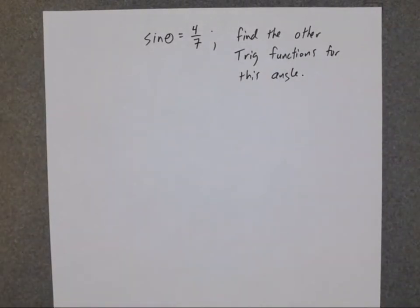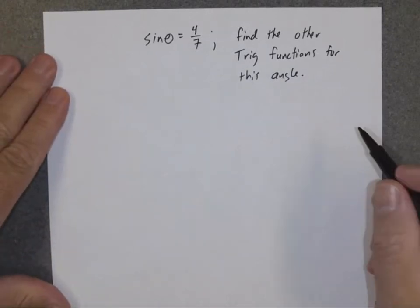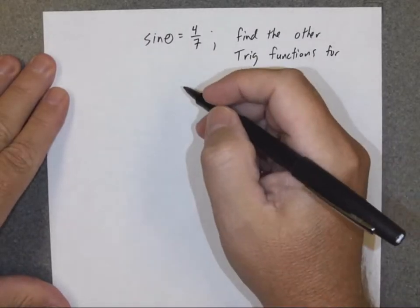So we have an angle and we know that the sine of theta is 4 over 7. We want to find what the cosine of theta would be, what the tangent of theta would be, and the other five trig functions. Now there are actually two methods to go about solving this kind of problem.